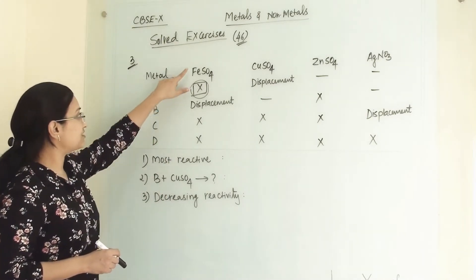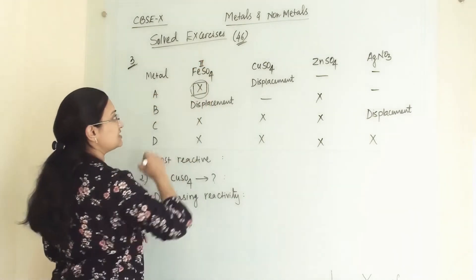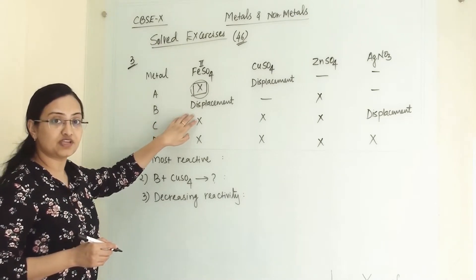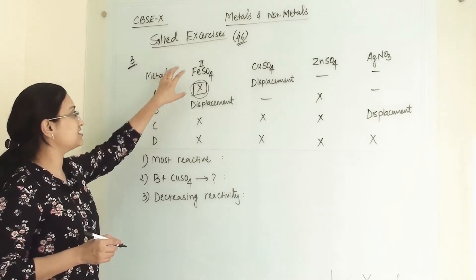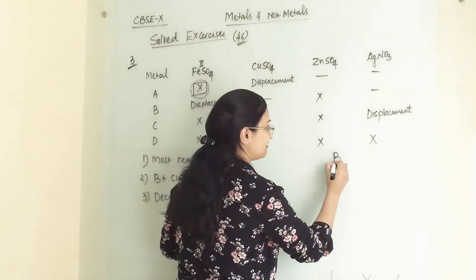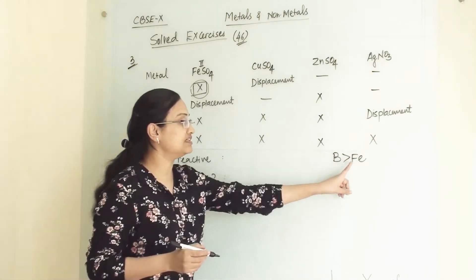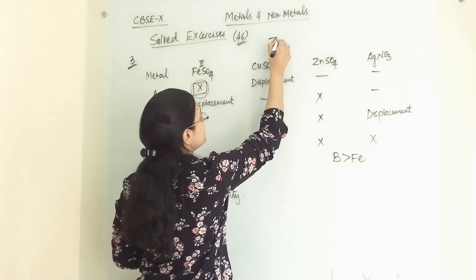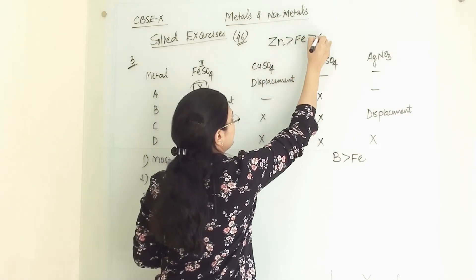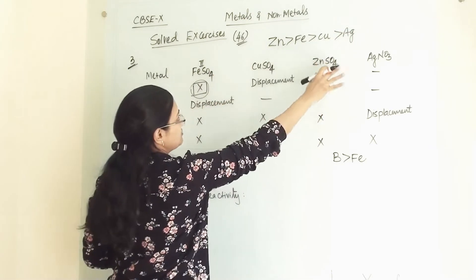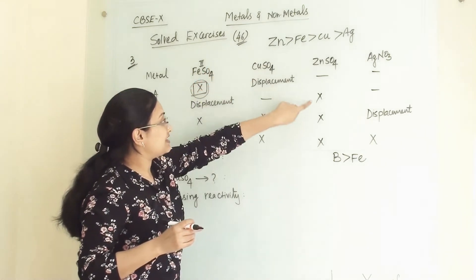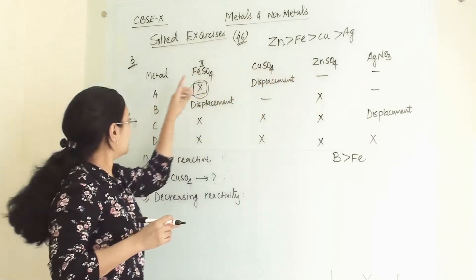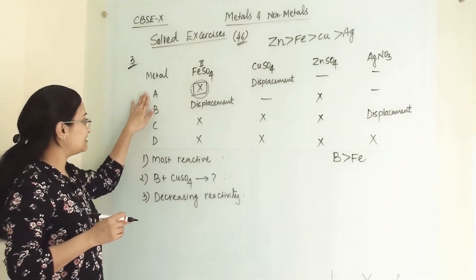From the table, metal B reacts with ferrous sulfate (FeSO₄), meaning a displacement reaction takes place. This happens only when metal B is more reactive than iron, so B can replace Fe. Among the metals given — Fe, Cu, Zn, and Ag — zinc is the most reactive, then iron, then copper, then silver. None of these metals can replace zinc.